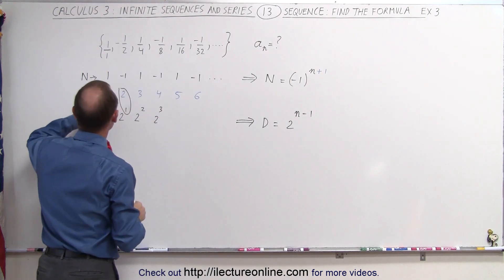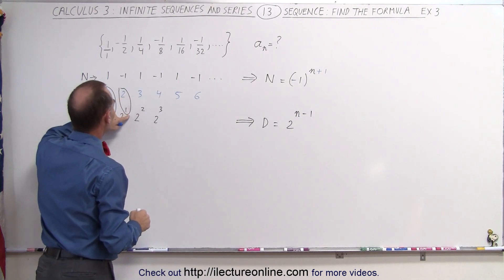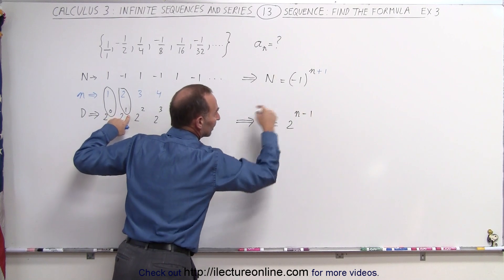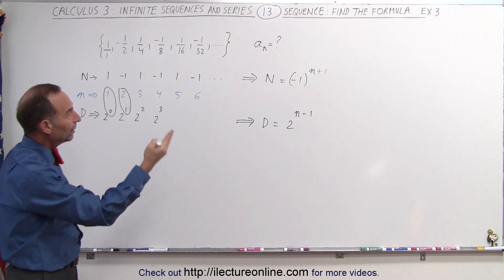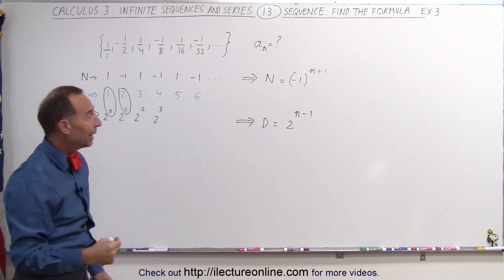If n is one, the exponent is zero. If n is two, the exponent is one. That's exactly what we get when we write it like this. So now we have the general format of the numerator and the denominator in terms of n,